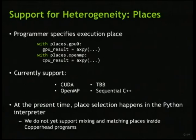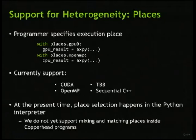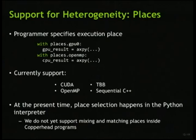We also have support for heterogeneity. There are a lot of different kinds of parallel hardware, and we want to be able to target various kinds. The programmer actually specifies where you want it to run. For example, if you want your function to run on GPU zero, you say 'with places.GPU0', and then inside the block defined by that with statement, all of the Copperhead calls will execute on GPU zero. If you want it to run on OpenMP, you give it a different place. We currently support four places: CUDA places like GPUs, OpenMP, Intel Thread Building Blocks, and sequential C++. At the current time, all place selection happens in the Python interpreter, so you can't mix and match places inside of a Copperhead program itself.